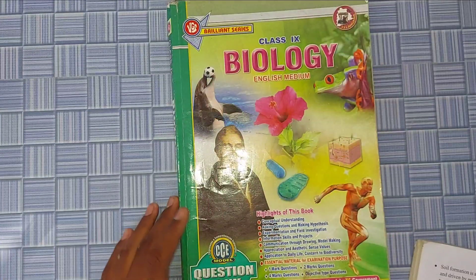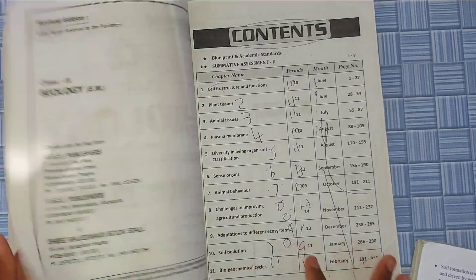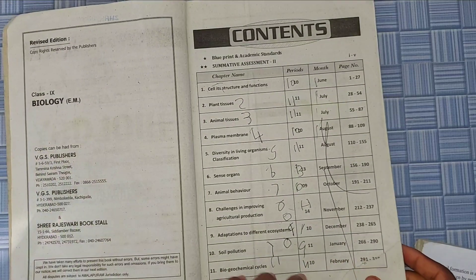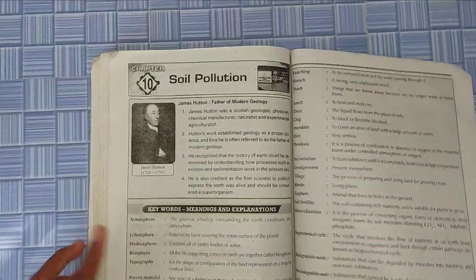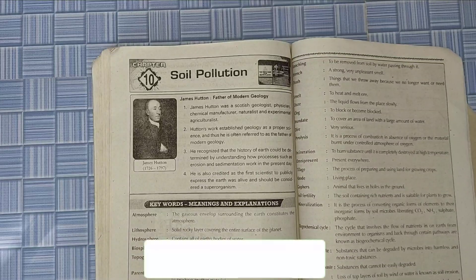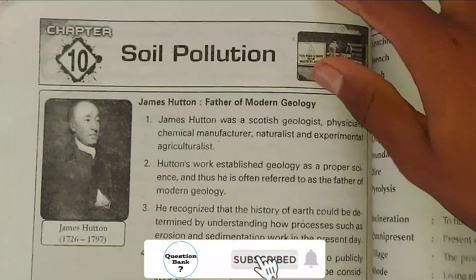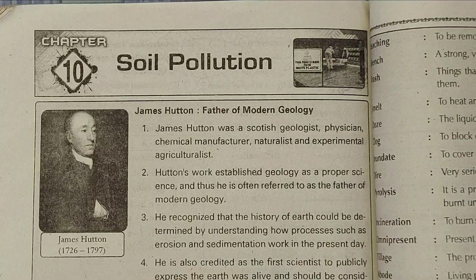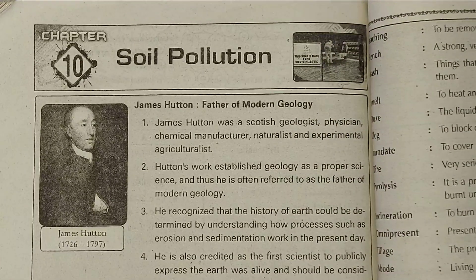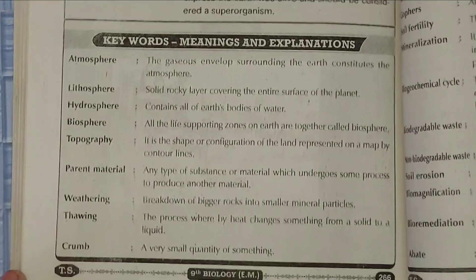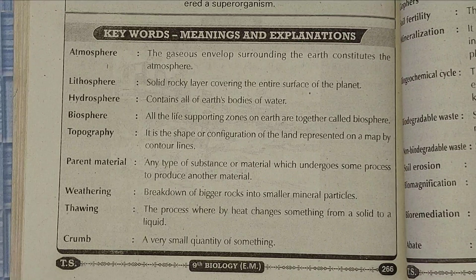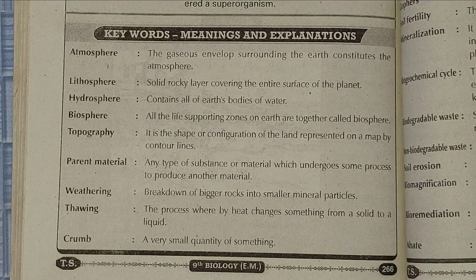Now I will see in the biology question bank — page number is 266. You can see here: Soil Pollution. First we will see keywords, meaning and explanation. You can see here the question making section, and a link in the description for this. Keywords meaning and explanation.